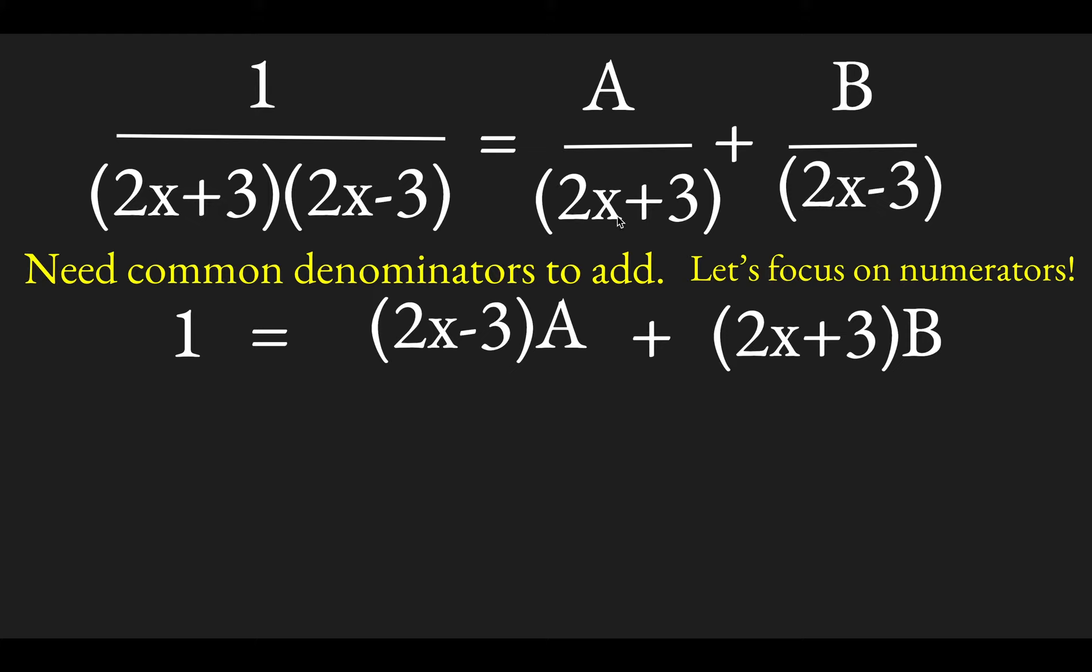And then, of course, the bottom would be 2x plus 3 times 2x minus 3, but I'm not going to bother to write that because that's going to be the same denominator over here. So I'm just going to focus on the numerator only. And then for b, the second term here, I would have to multiply by 2x plus 3 divided by 2x plus 3. And so that's why the b is multiplied by 2x plus 3.